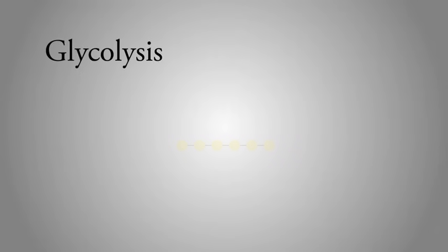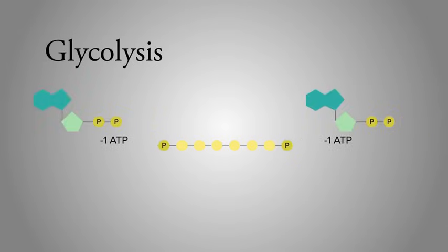Glycolysis is the first step of cellular respiration, which starts with a single glucose molecule. Glycolysis takes place in the cytoplasm of the cell, where ATP donates two phosphates to a glucose in a process called phosphorylation. Phosphorylation is when phosphate is added to a molecule.